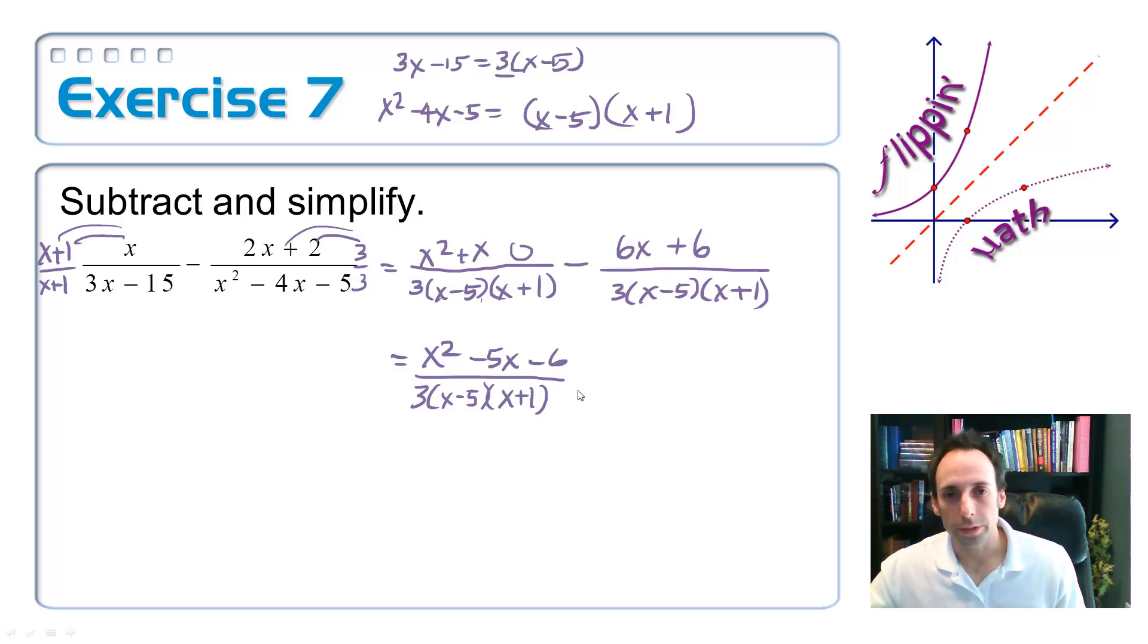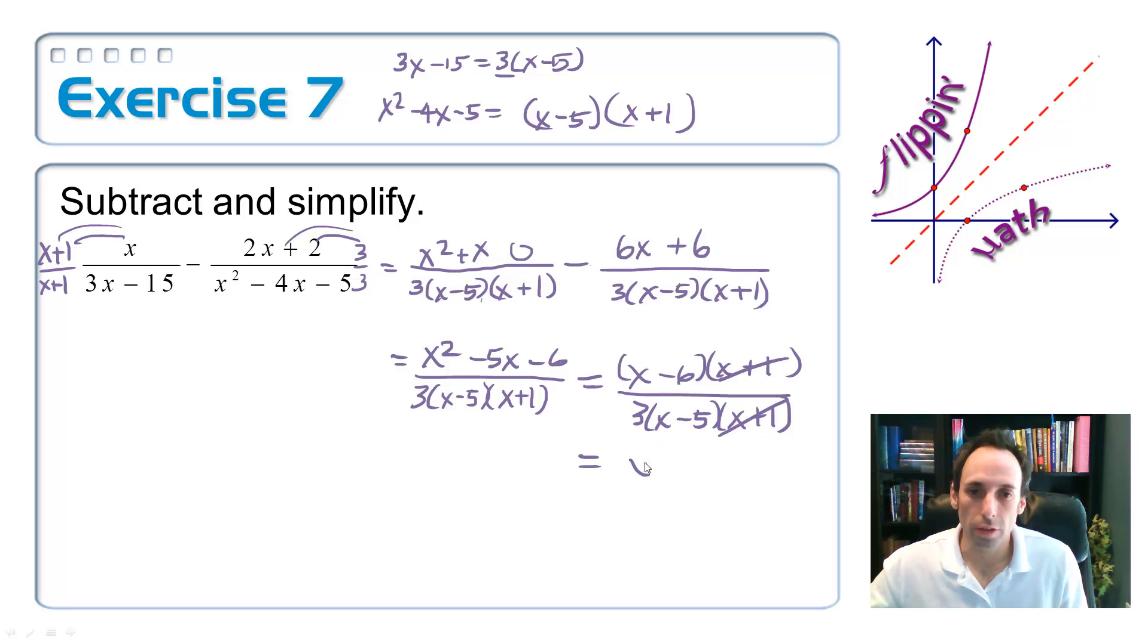Am I done? I don't know yet. I just don't know until I factor the top. I think the top factors as x minus 6, yep, and x plus 1 over 3x minus 5 times. Look at this. Look what's going to happen. Cancel, cancel. Oh, it feels so satisfying. My final answer, then, is x minus 6 all divided by 3 times x minus 5. And that one's finished.